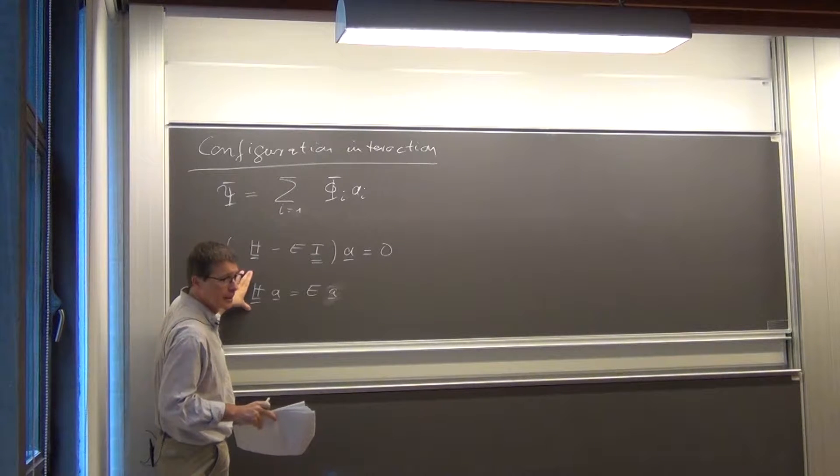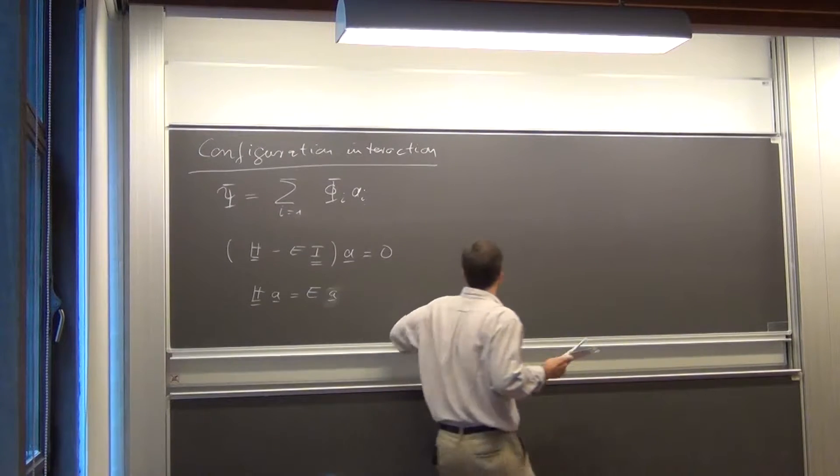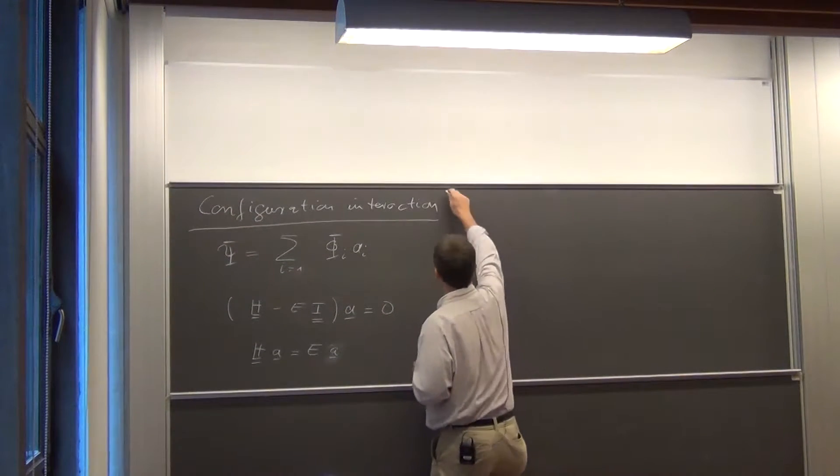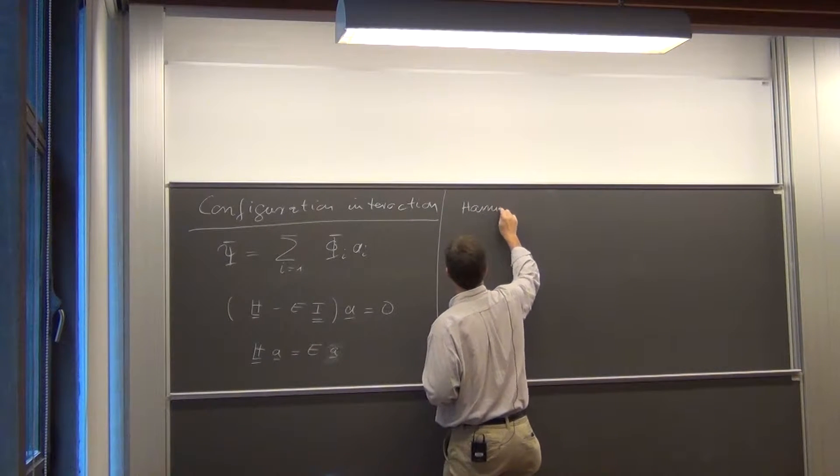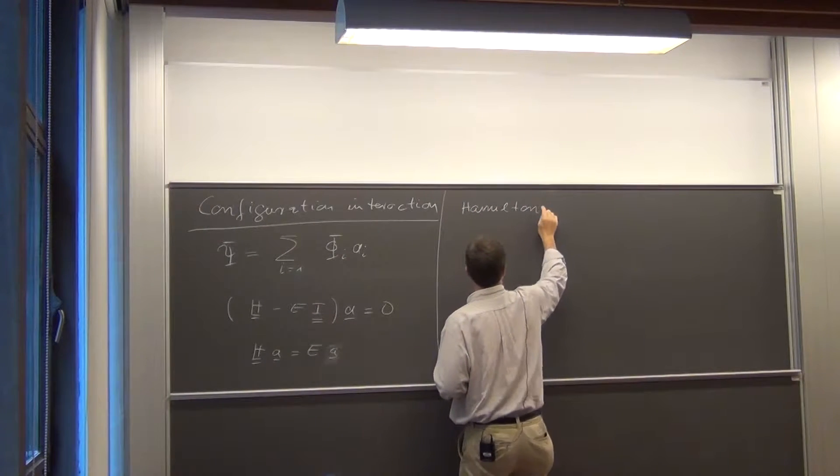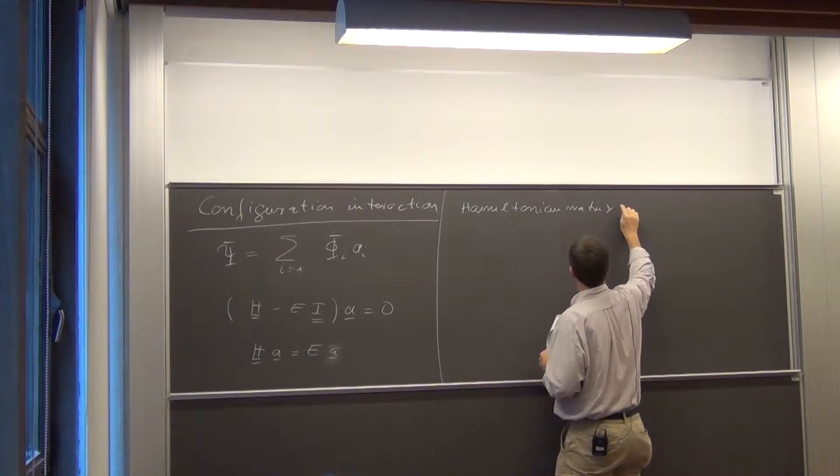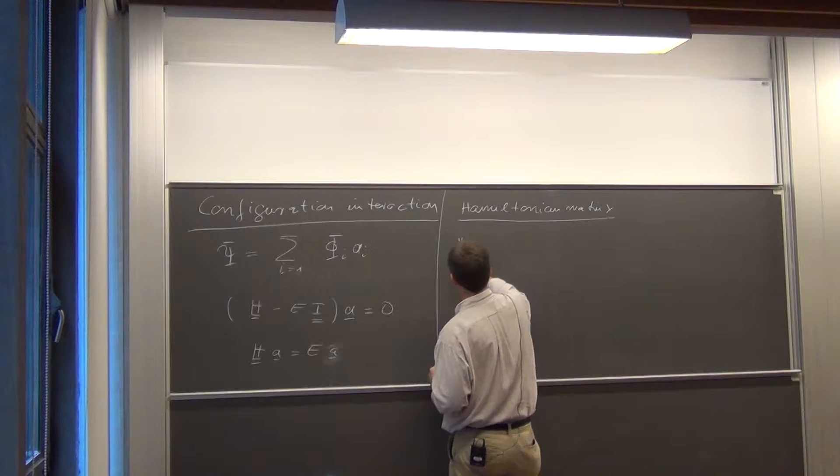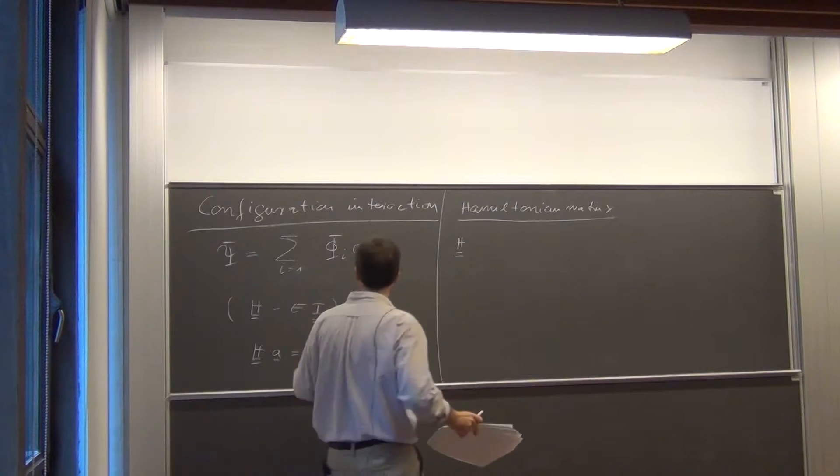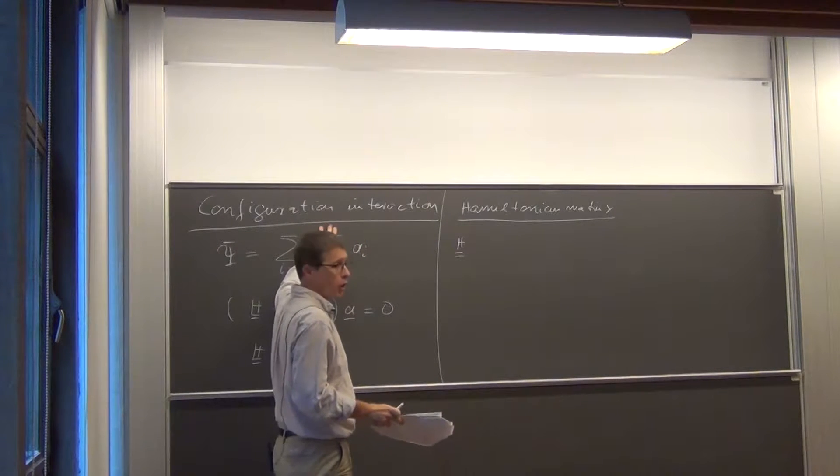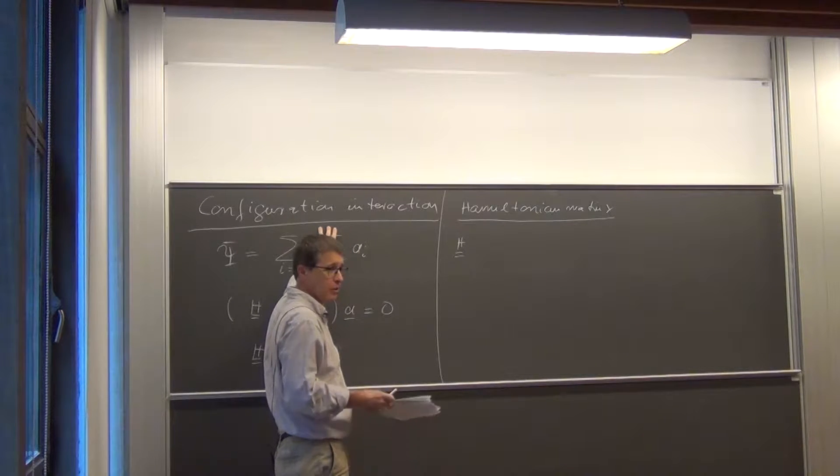What I want to talk now about is a bit about this Hamiltonian matrix. If we include really all Slater determinants which one can get from the set of molecular orbitals...